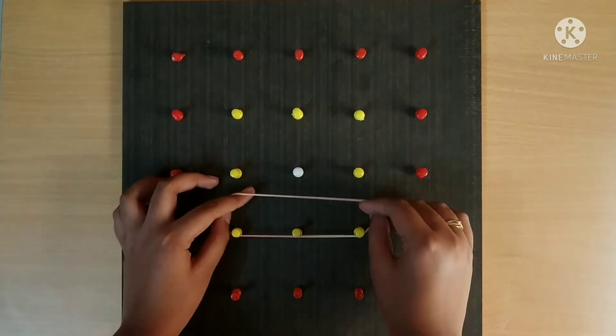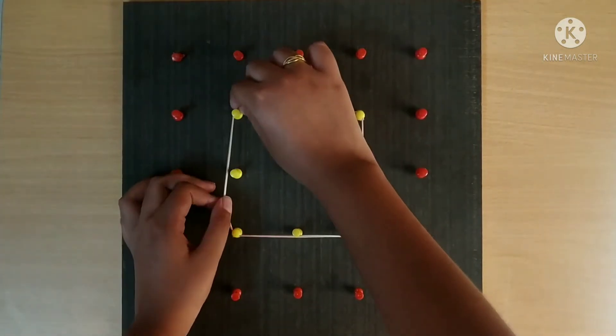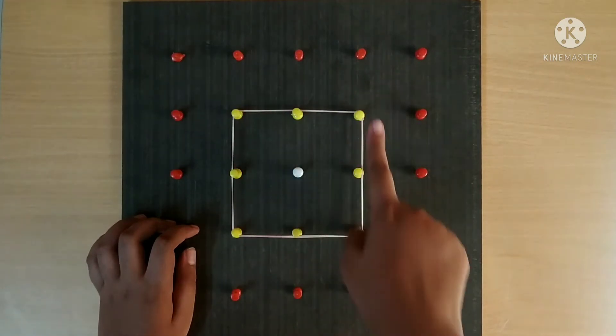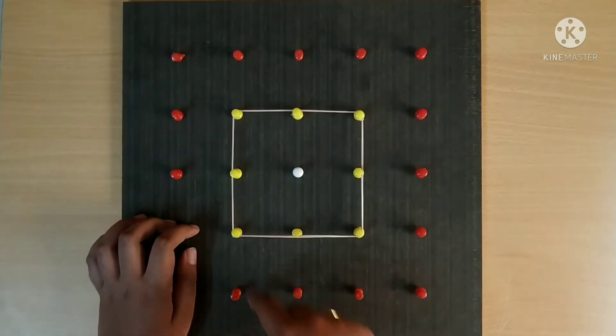Square. A square has 4 sides, 4 vertices. Vertices are nothing but corners.